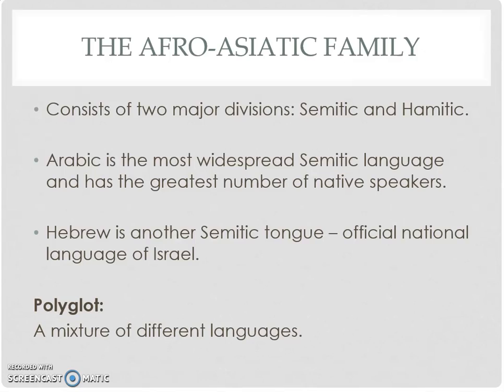The Afro-Asian language family has two major divisions: Semitic and Hamitic. Arabic is a widespread Semitic language, and Hebrew is another Semitic tongue. A polyglot is a mixture of different languages.